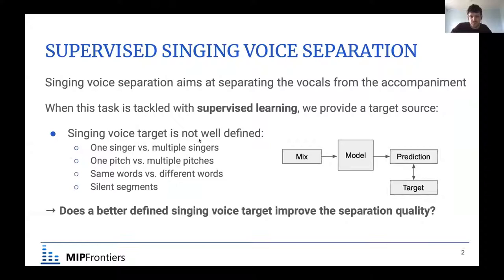Nowadays this is mainly tackled as a supervised learning problem, where we train a model and have to provide a target — the true answer of what the vocals would be in the mix. We have a mixture, give it to a model, it makes some prediction, we show what would have been the exact right answer, the source we expect, and then we can update the model to get a better prediction.